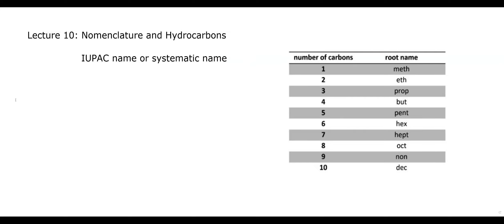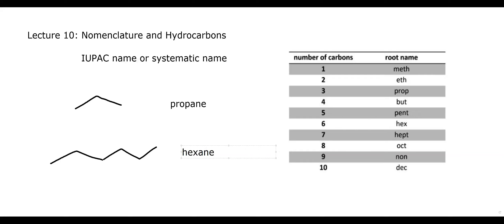Here's a chart showing prefixes based on the number of carbons we have — this is for naming hydrocarbons. For example, a three-carbon chain uses the prefix 'prop-' and the ending '-ane,' indicating a hydrocarbon containing only carbon and hydrogen. So propane has three carbons. A six-membered chain would be called hexane. We can use this chart to figure out basic chains: propane, butane, pentane, hexane, and so on.